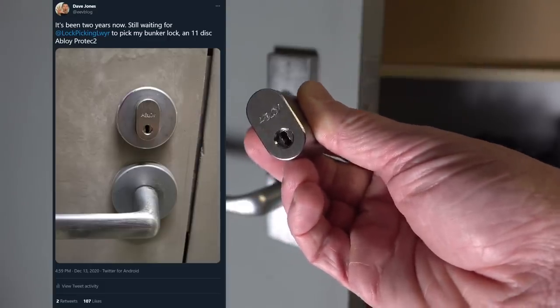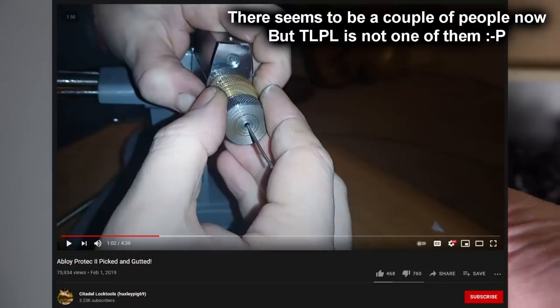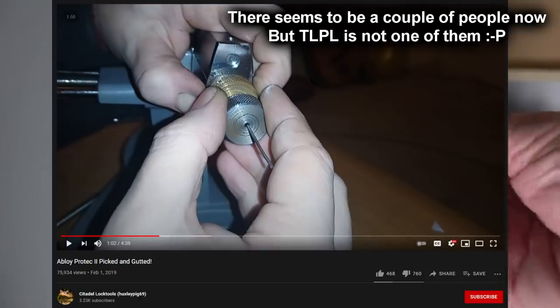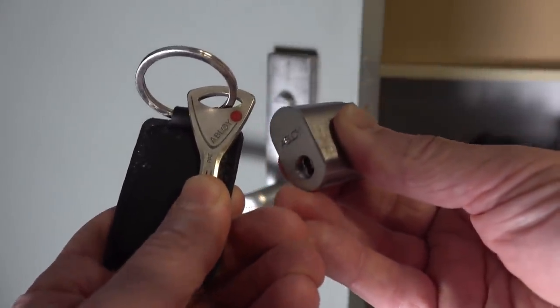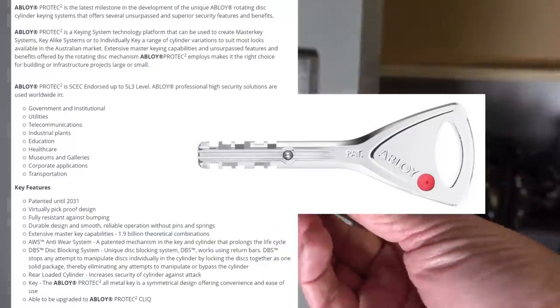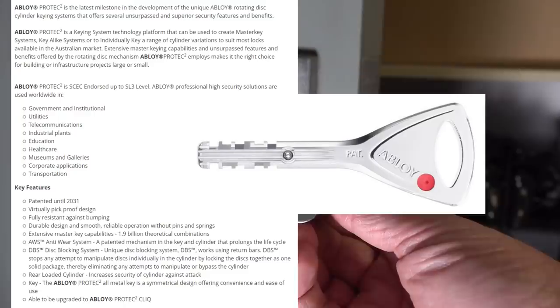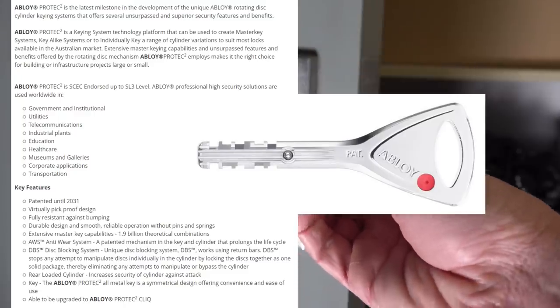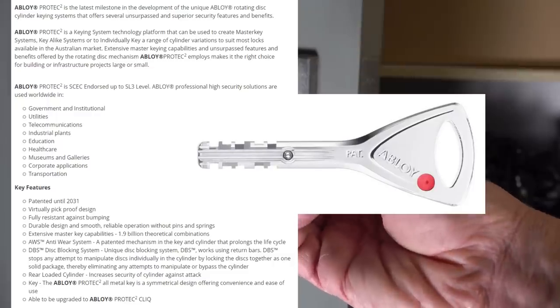So the lockpicking lawyer cannot pick this lock. Apparently, there's only, I believe there's only one person so far who has picked the Abloy ProTech 2. And that's another YouTuber. And he's keeping it very secretive how he did it, designed his own custom tools to do it and everything else. So anyway, it's a 12-cylinder disc system. I won't show you the key, of course. But here's a photo of what it looks like. And they do actually market it as virtually pick-proof, although it was for quite a few years. But yes, somebody has now done it with a specialised tool.